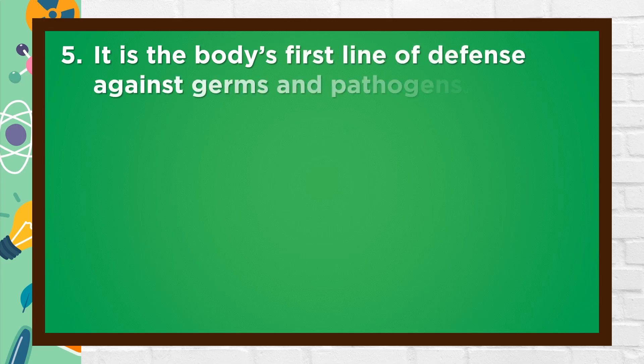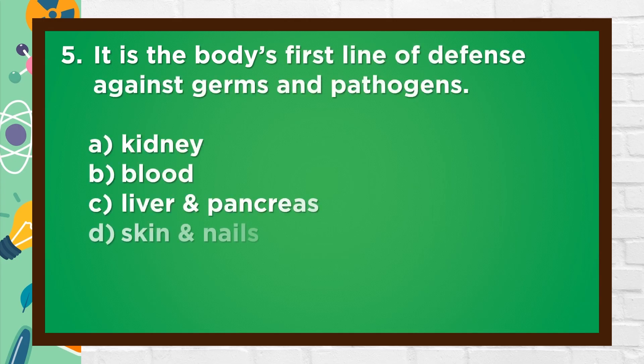Number 5. It is the body's first line of defense against germs and pathogens. A. Kidney. B. Blood. C. Liver and pancreas. D. Skin and nails.